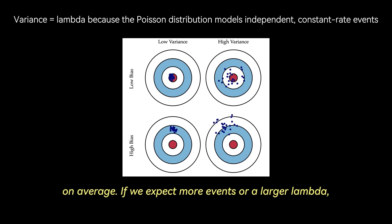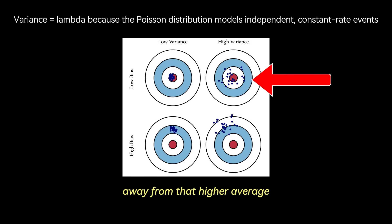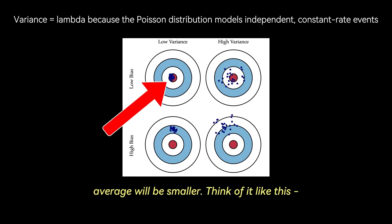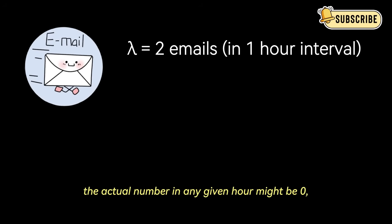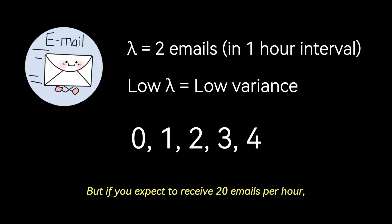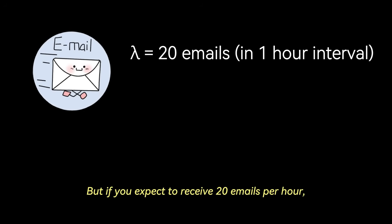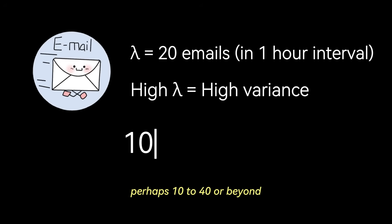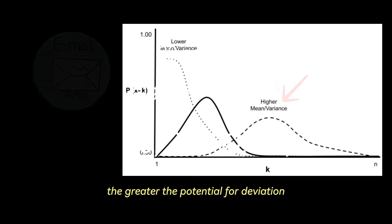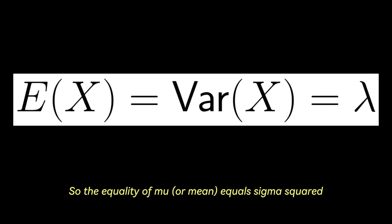If we expect more events, or a larger lambda, there's naturally more room for the actual count to fluctuate away from that higher average. Conversely, if we expect fewer events or a smaller lambda, the fluctuations around that lower average will be smaller. Think of it like this. If you expect to receive two emails per hour, the actual number in any given hour might be 0, 1, 2, 3, or maybe even 4. The spread, or variance, isn't huge. But if you expect to receive 20 emails per hour, the actual number could range much more widely, perhaps 10 to 40 or beyond. The higher the average, the greater the potential for deviation.